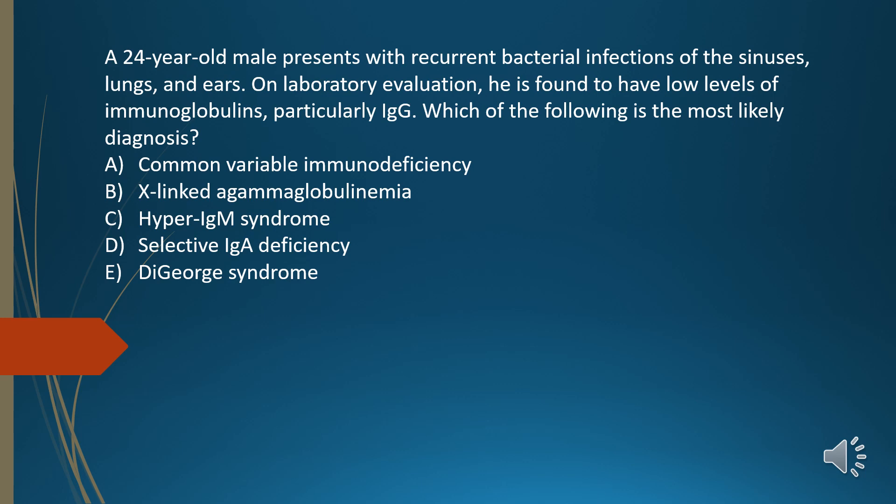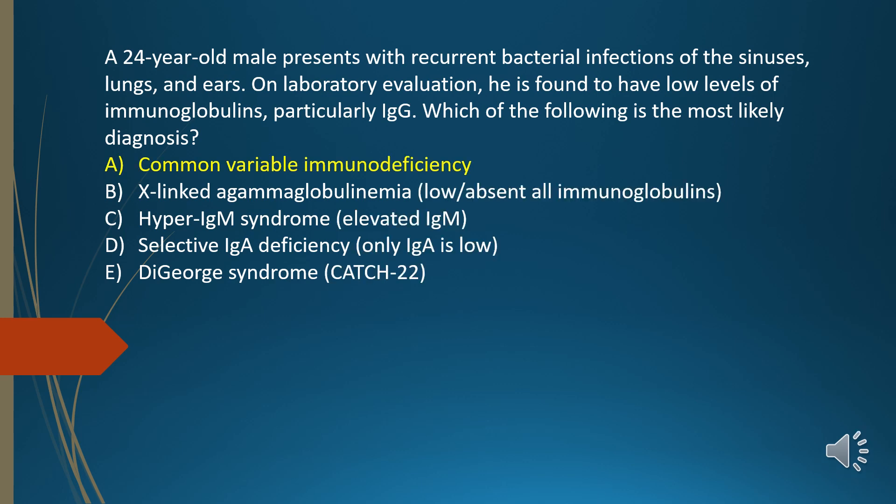E. DiGeorge syndrome. The answer is A, common variable immunodeficiency. Choice B should have low or absent all immunoglobulins. Choice C should have elevated IgM. Choice D should have low IgA only. DiGeorge syndrome should have a 22q11 deletion.